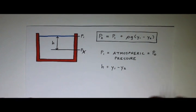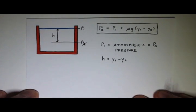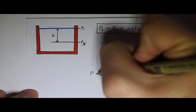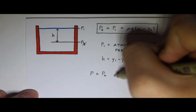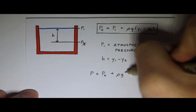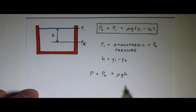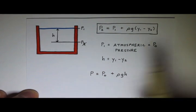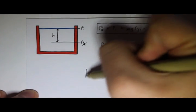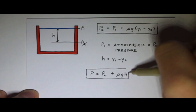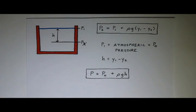This allows me to write the equation in a simpler form. So the pressure p at some depth is equal to the atmospheric pressure plus the density times g times h, which is the depth, or the vertical distance below the surface.